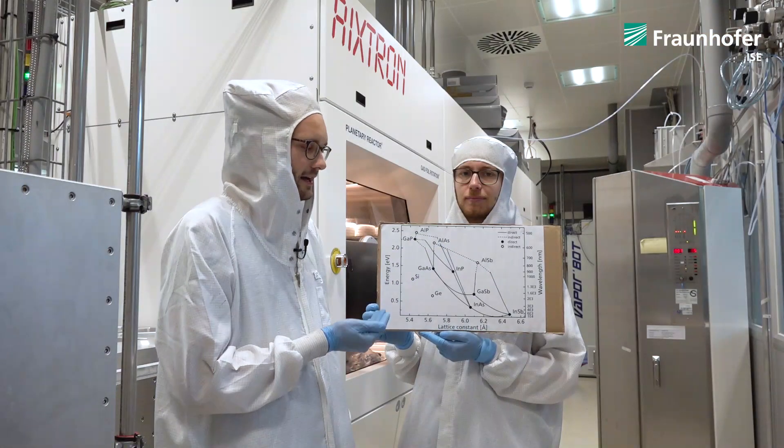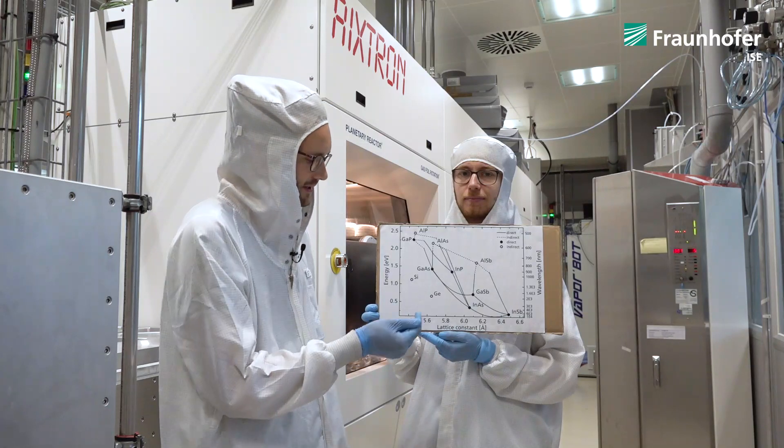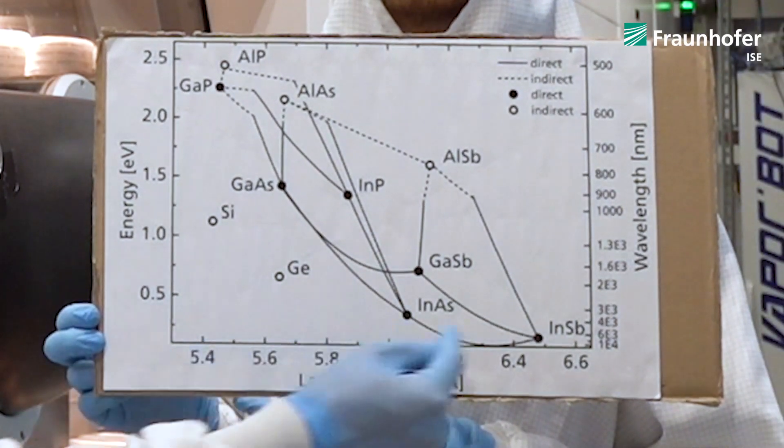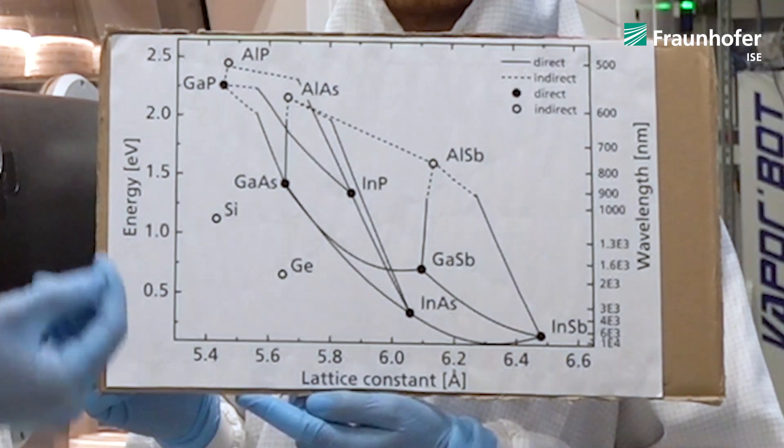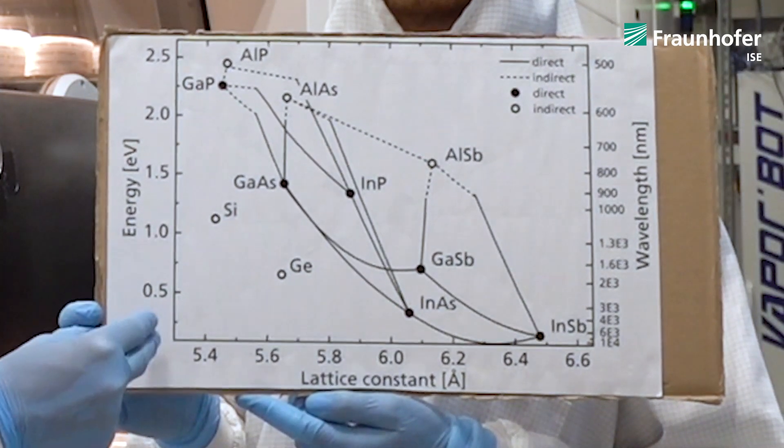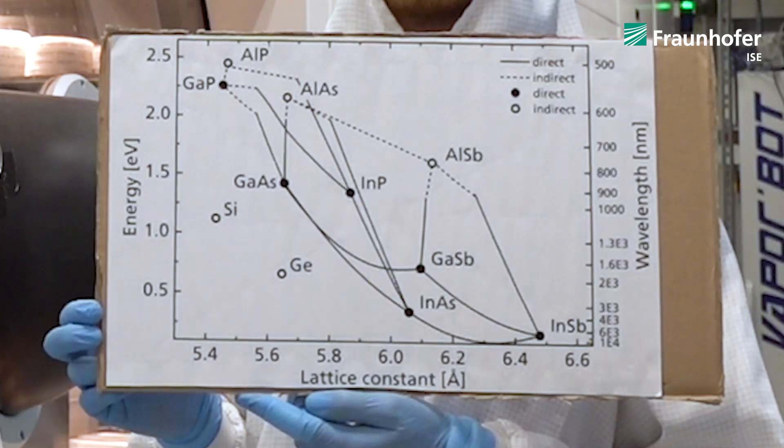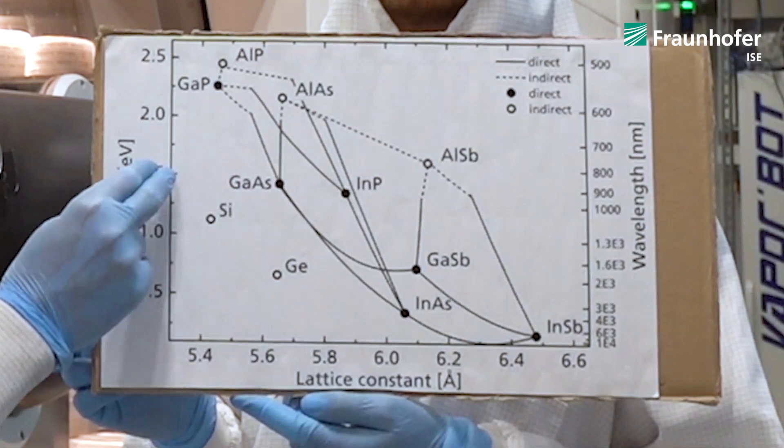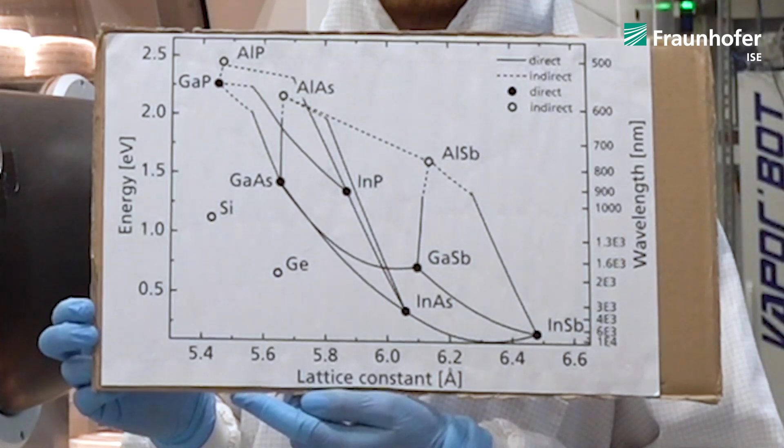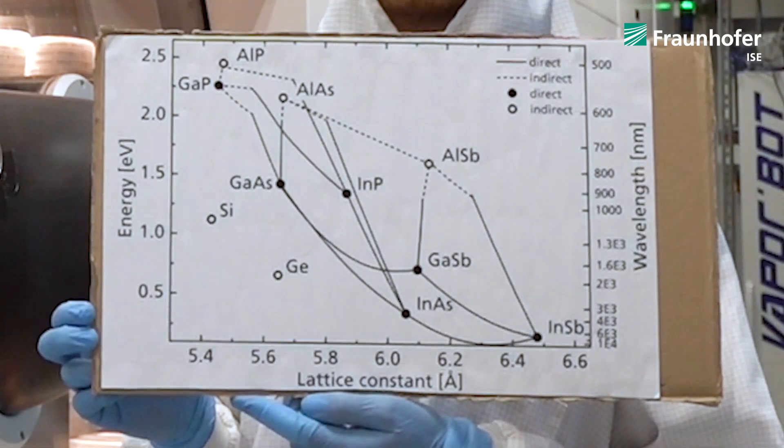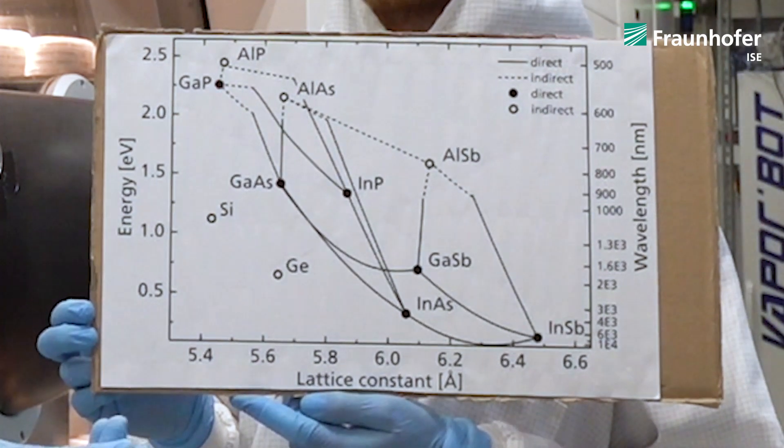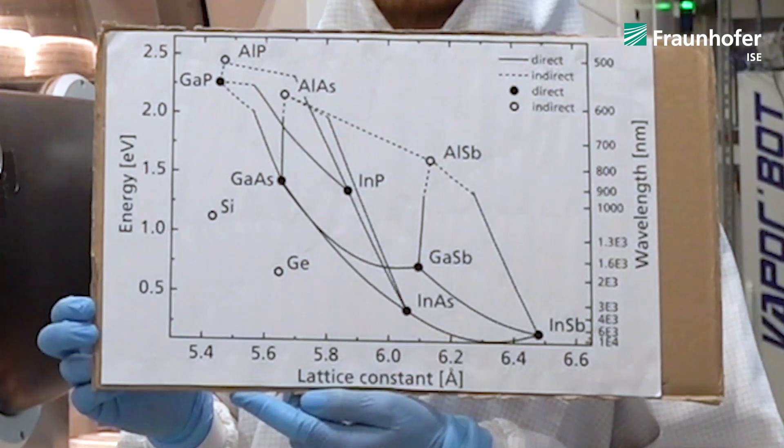Here we can see which variety of elements we can use for this. This is called the 3-5 semiconductor map and on the x-axis you can see the lattice constant which means the distance between two atoms. On the y-axis we have the energy of the band gap shown and for example for gallium arsenide the band gap is 1.42 and until this level it is able to absorb light and to produce electricity out of it. After this band gap it is transparent to light.